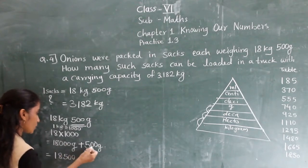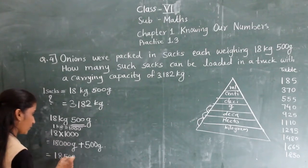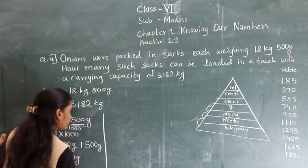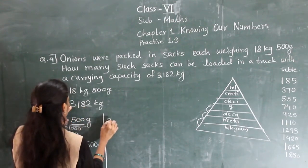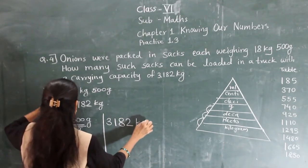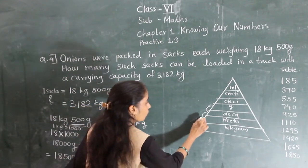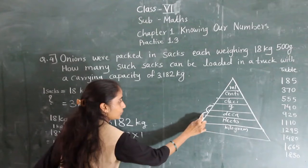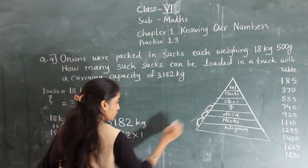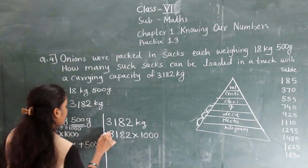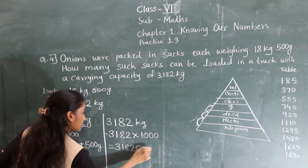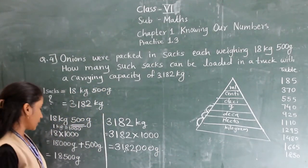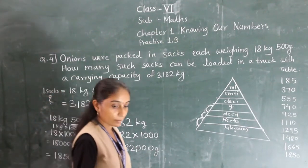Now we convert 3,182 kilograms into grams. Again, 3 steps up, so multiply by 1,000. The answer is 31,18,000 grams. Now we have completed the conversion and we need to divide 31,18,000 grams by 18,500 grams.